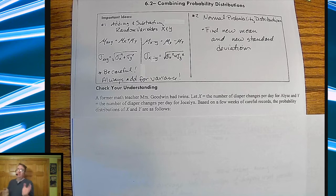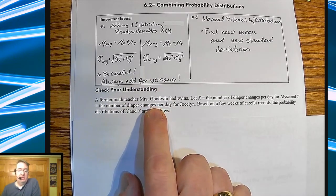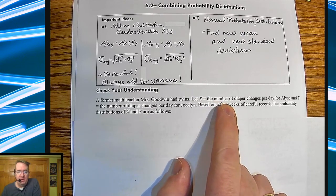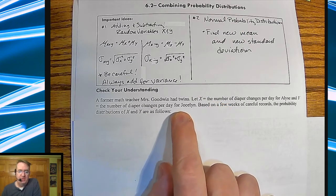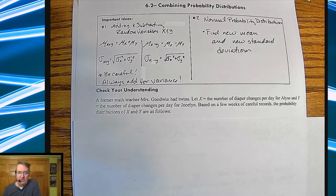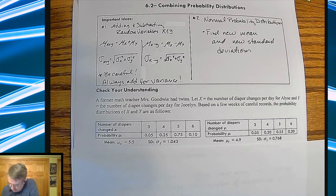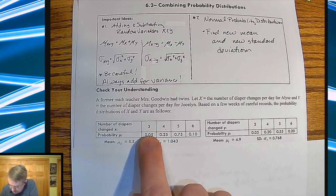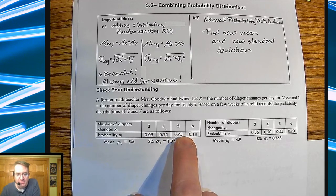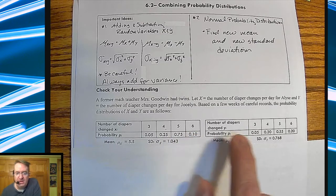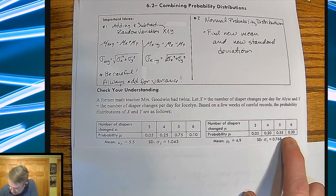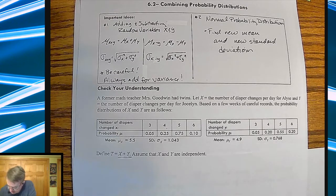Okay. Ready to talk about diapers? Well, if not, then obviously you shouldn't be a parent. But we had a former teacher here, Mrs. Goodwin, and she had some twins. And so X is going to be the number of diapers day for Elise in terms of diaper changes, and Y is the number of diaper changes per day for Jocelyn. So based on a few weeks of careful records, the probability distributions are as follows. So over here, for Elise, we had, this is how many diaper changes she had, between three and six. And that was, she's obviously using a lot, doing five a day. Where over here, we have Jocelyn, and then we got over here, and those are the distributions here. So some days she has a little bit more, mean, standard deviations, et cetera.